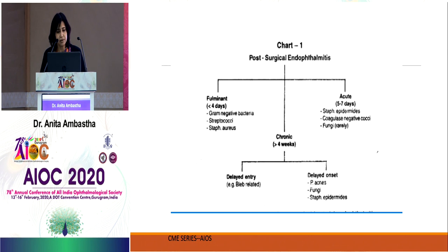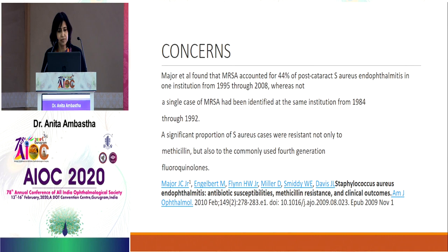To summarize the microbiology by presentation timing: in fulminant cases (within four days), gram-negative bacteria and streptococci predominate and carry the worst visual prognosis. Acute cases (five to seven days) are commonly due to staph epidermidis and other coagulase-negative cocci. Chronic delayed cases (beyond four weeks) are caused by P. acnes and fungi. MRSA, resistant not just to methicillin but also to fourth-generation fluoroquinolones, is a growing concern.